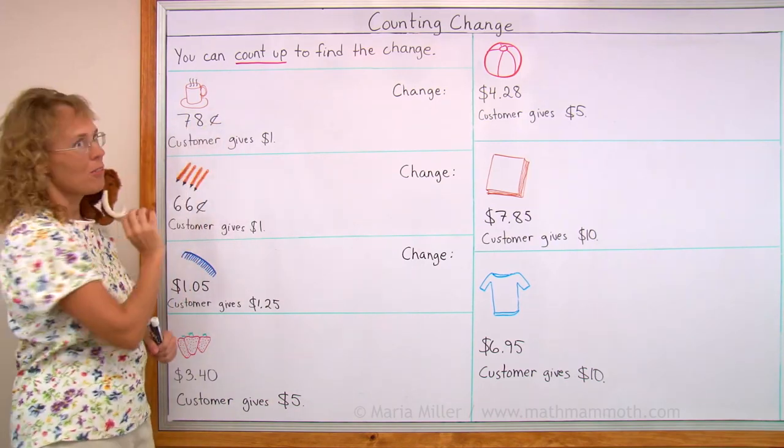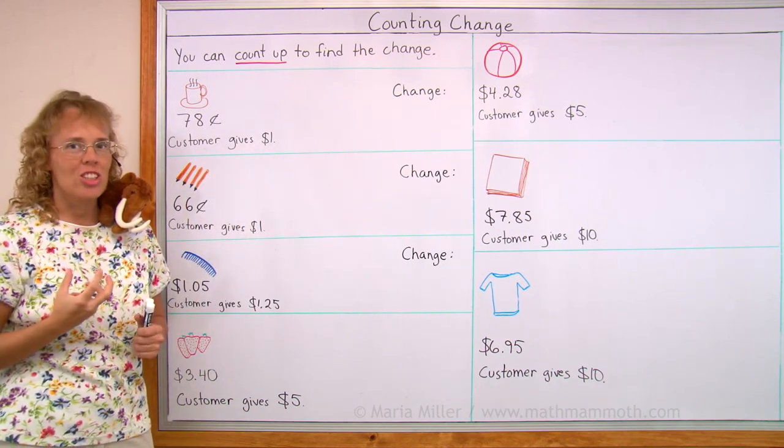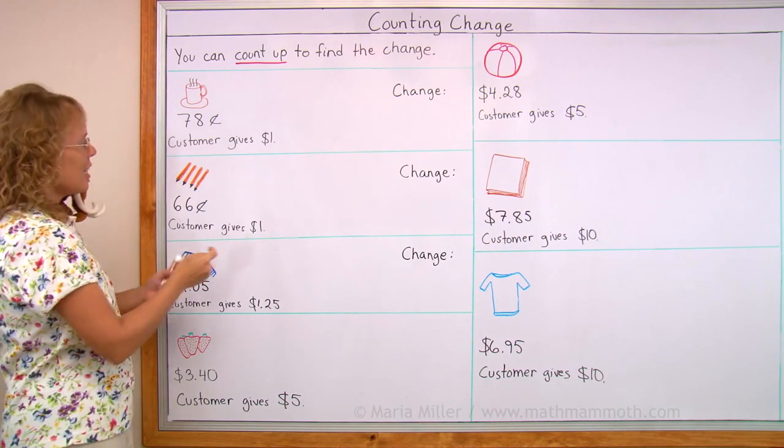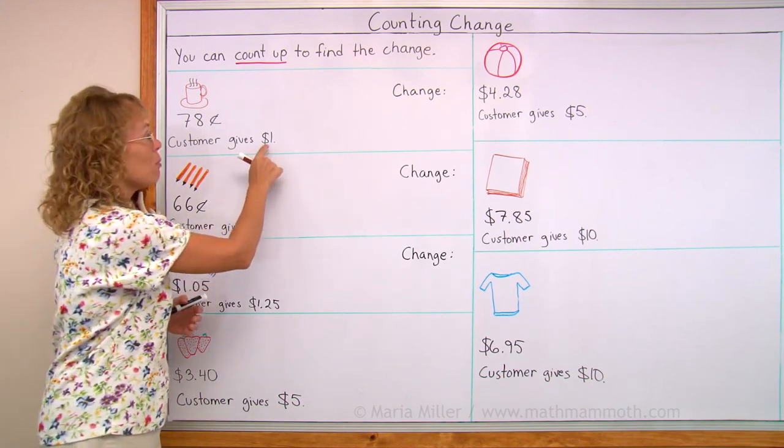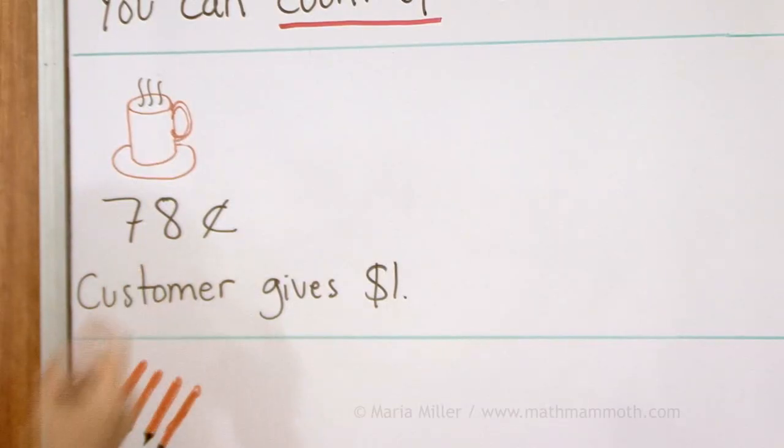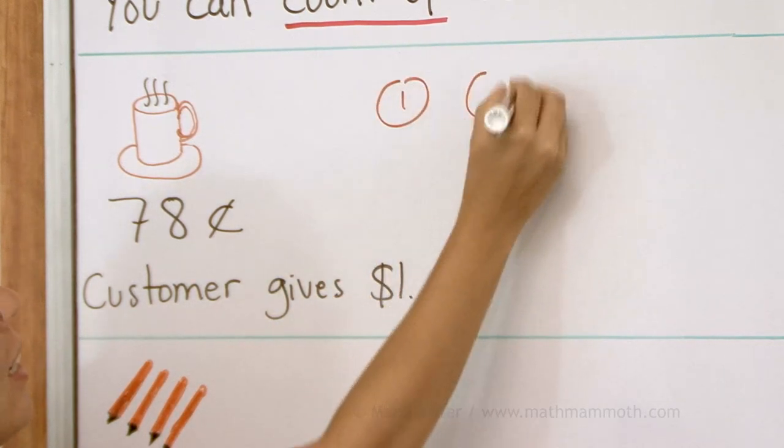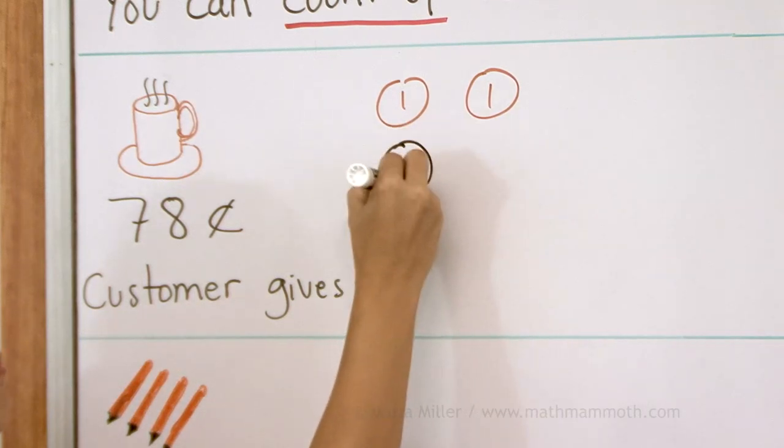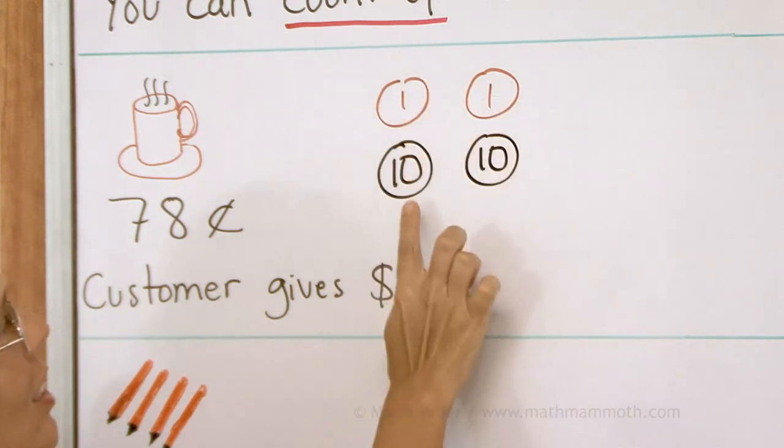Let's say that somebody buys a cup of coffee for 78 cents and they give a dollar. Now you remember that the change is how much you are overpaying. It is the difference between this and this amount. For counting up we will start with this smaller amount, 78 cents, and we will count until we reach one dollar. From 78 cents I will first count up to 80 cents using two pennies. A penny and a penny would go from 78 to 80 cents. And then from 80 cents I go to 100 cents or one dollar using two dimes. So now I have counted up to one dollar and this is the change. It is 22 cents.